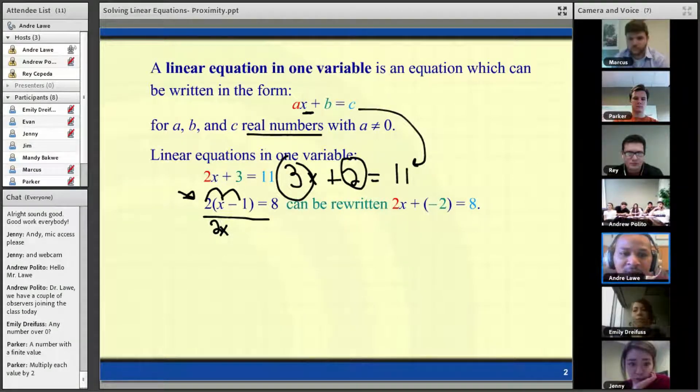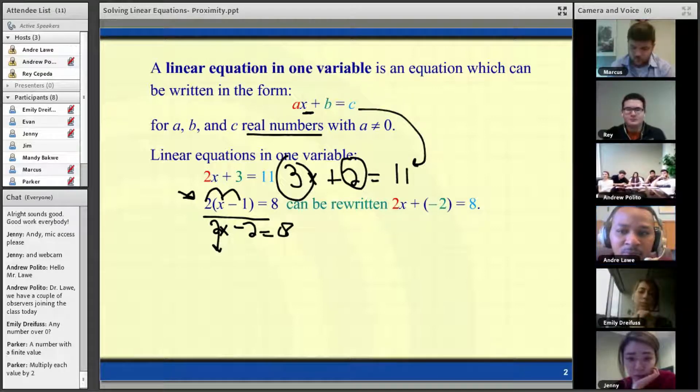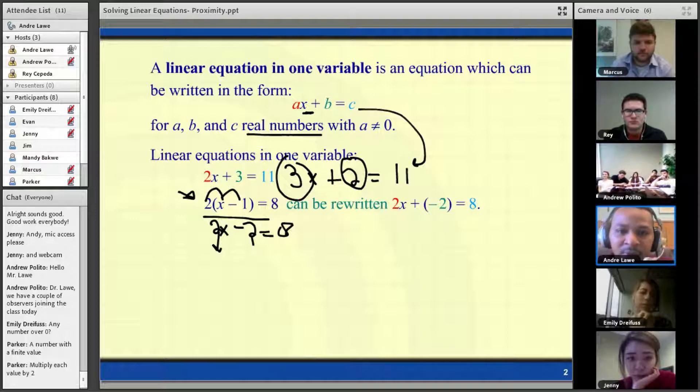2 times negative 1 would be negative 2. And then here we have it in our standard form, where a is represented by 2, b would be represented by negative 2, and c would be represented by 8.